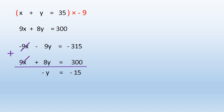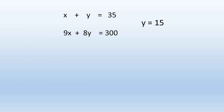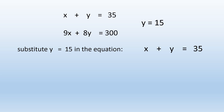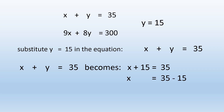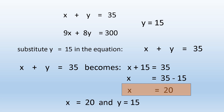I will add both equations. X eliminates X, and I still have minus Y equal minus 15, which means Y equals 15. Now I have the value of Y equal 15 and I want to find X. I'll use the first equation, which is easier: X plus 15 equal 35, so X equals 20. Now I have X equals 20 and Y equals 15 — I have solved the system.